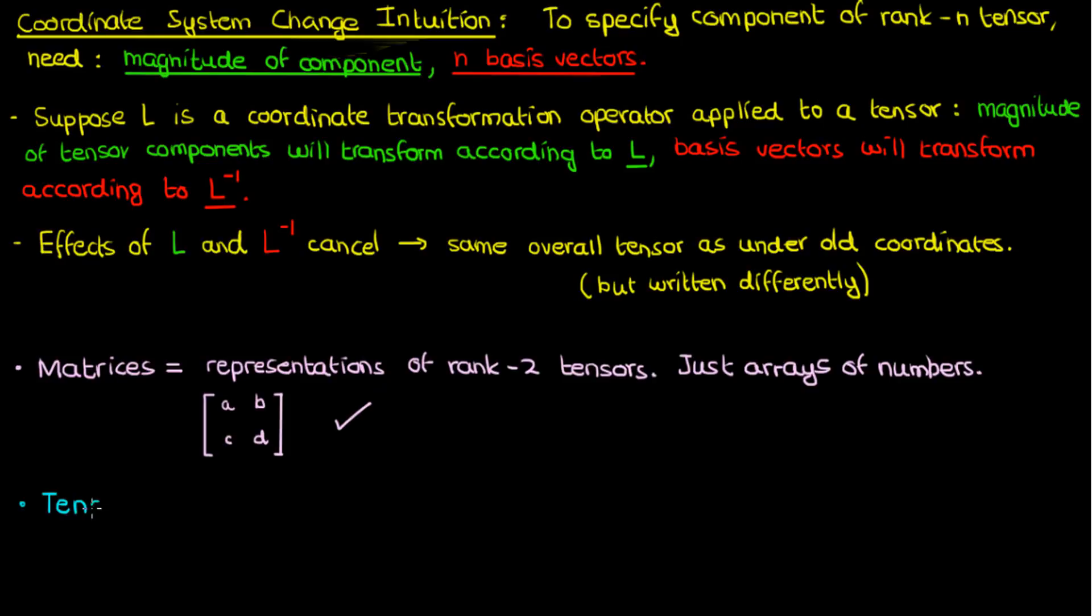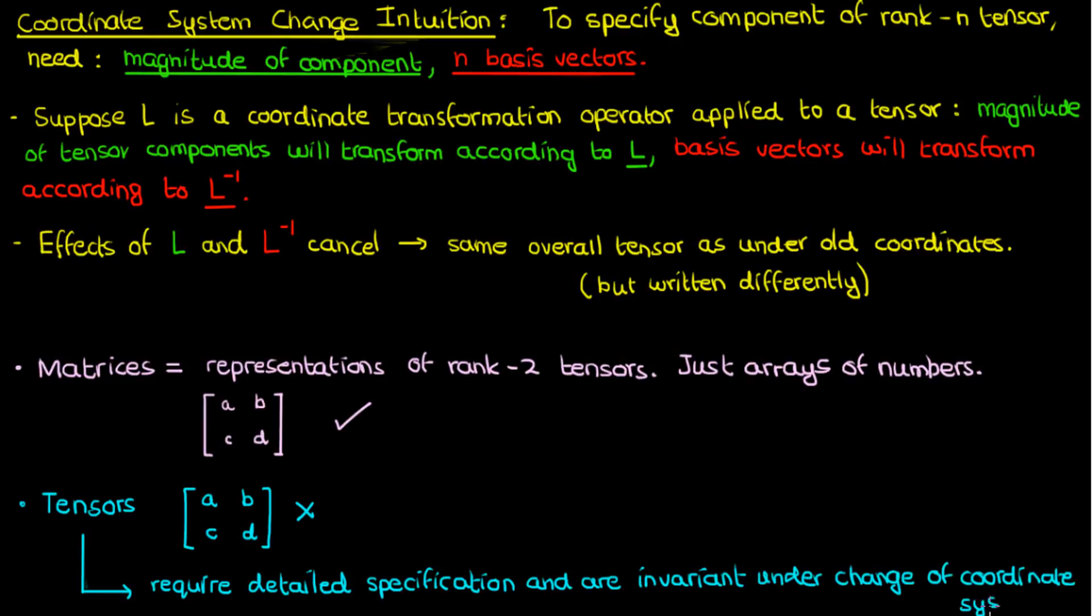But when I specify a tensor, I can't just write down ABCD and be done with it. I need to specify the coordinate system, the components, and the basis vectors that each of those components correspond to. So in that sense, a tensor is much more than a matrix. A tensor requires more detailed specification, and it also has these transformation properties where it's invariant under a change of coordinate systems. It has physical significance.